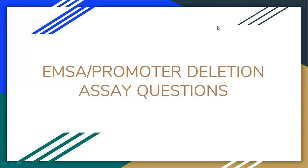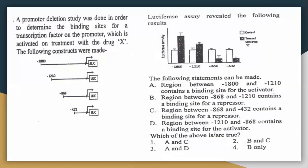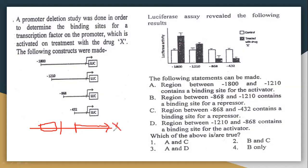Today we will discuss a few questions on EMSA and promoter deletion assay. First question: what do you mean by promoter deletion? If you remove the promoter from a particular gene, the expression level will be almost zero. The promoter is always located in the upstream region of a particular gene, and if you remove the promoter, the expression level will be almost zero.